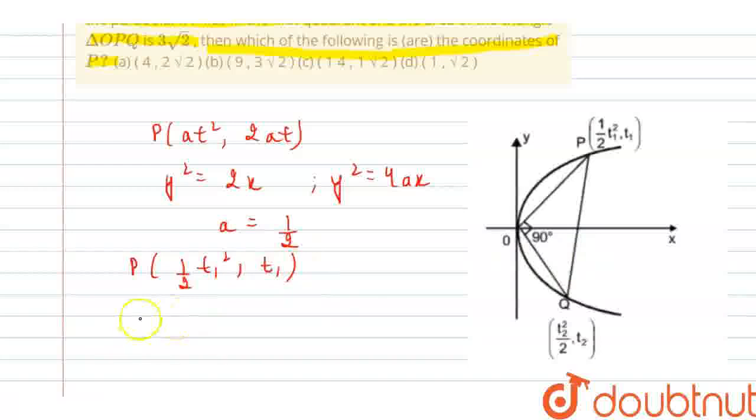Similarly, what would be the coordinates of point Q? That would be equal to half of t2 square, comma, t2. Now, this angle is 90 degrees.